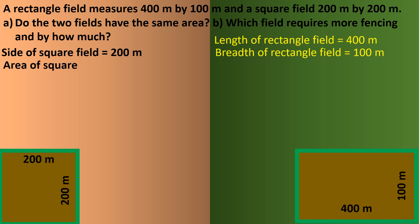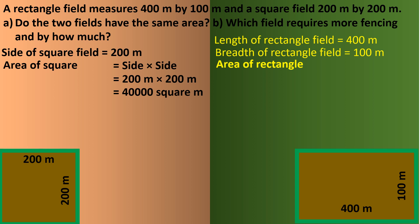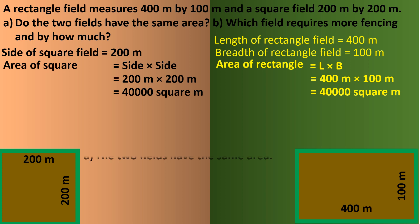Find the area of both figures. Area of square equals side into side, so 200 meters into 200 meters equals 40,000 square meters. Area of rectangle equals length into breadth, so 400 meters into 100 meters also equals 40,000 square meters. So the two fields have the same area.